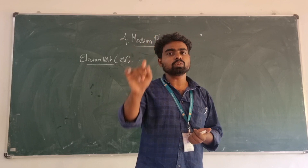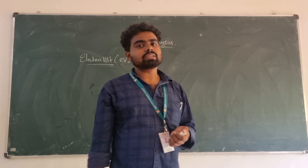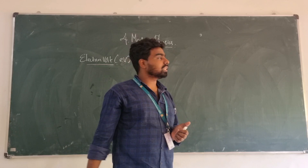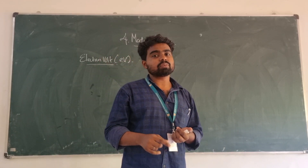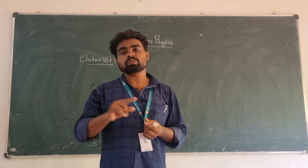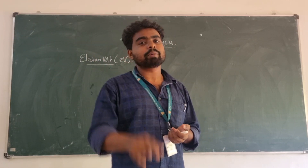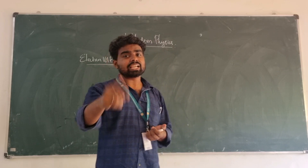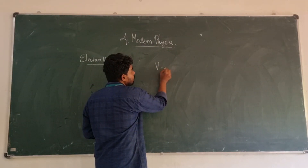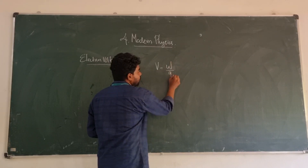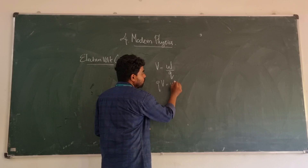We are learning about energy units — joule and related concepts. We are learning potential difference. Potential is the work done in taking a unit positive charge from infinity to a point in the electric field. We have V = W/Q, meaning voltage equals work done divided by charge. Therefore, W = Q × V.